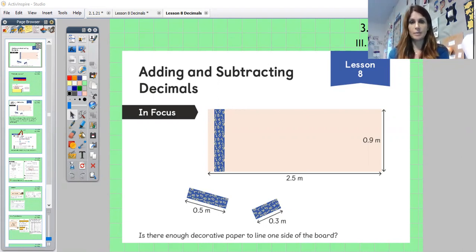Let's have a look at our in focus today. Have a look at the picture, that's quite crucial. We've got our image here with 0.9 meters and 2.5 meters. Then we've got two strips of paper. Ignore this because I think this is a little bit confusing. Basically what it's asking is, using this here and this here, is there enough decorative paper to line one side of the board?